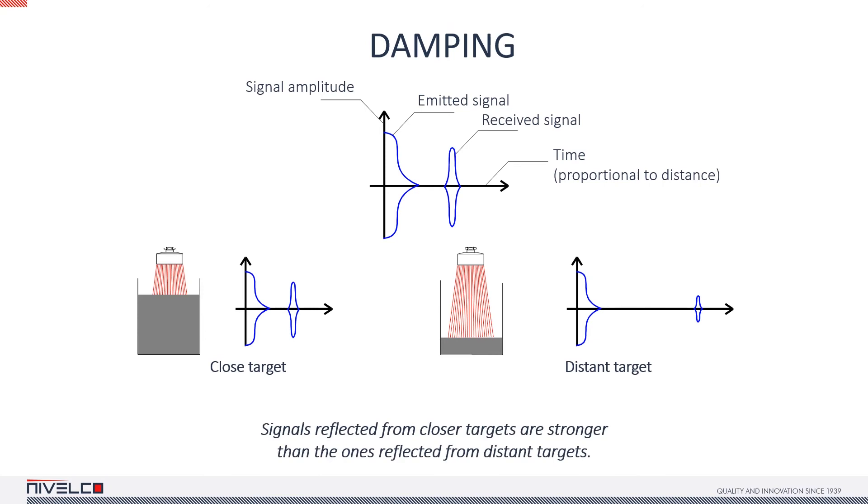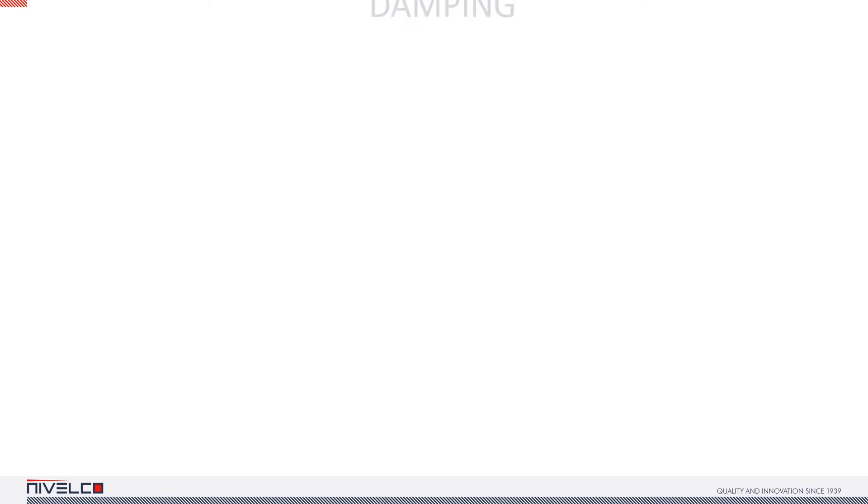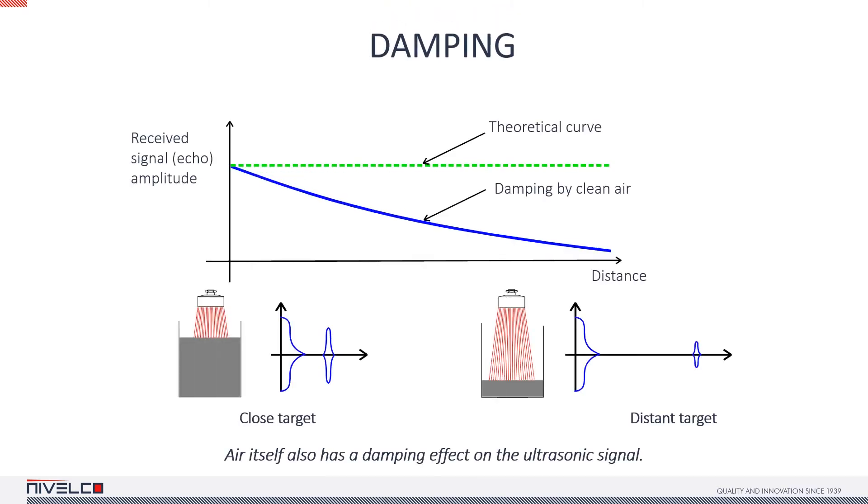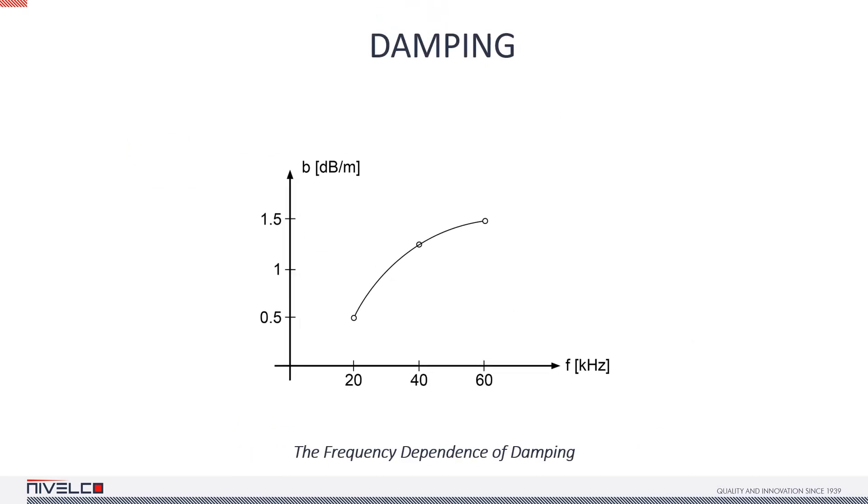While the target is close to the device, it provides a clear echo, but as the target gets further away, the echo diminishes, and after a while it gets so weak that the sensor is unable to pick it up. The green dotted line is the theoretical curve indicating the signal level when there is no damping at all. As soon as a damping factor like air or other gas is introduced, we get a curve like the blue one. The longer the signal has to travel, the weaker the echo gets. Damping depends on various factors like the physical properties of the atmosphere above the medium or the frequency of the device.